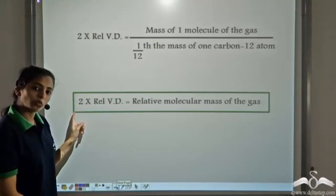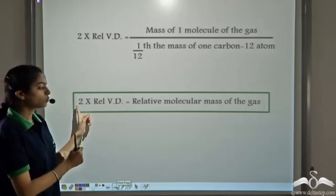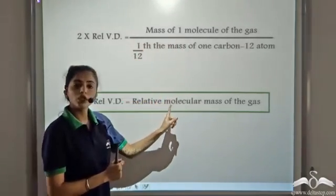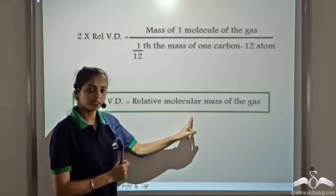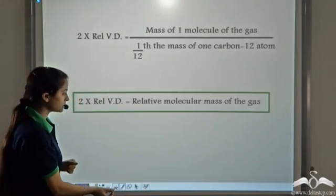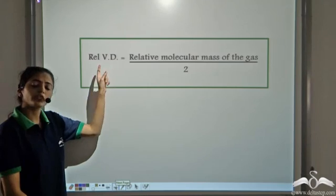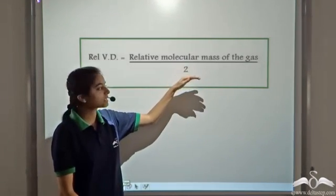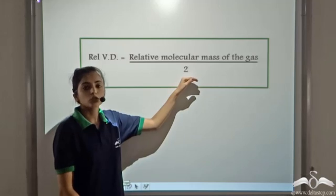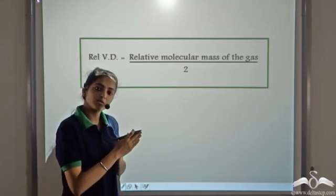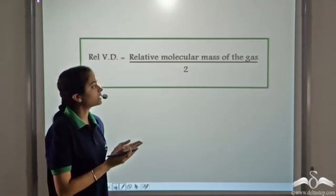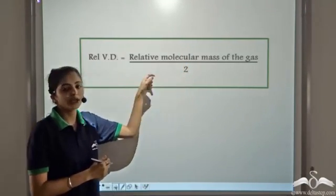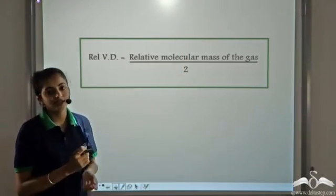So this is an important relation: two times the relative vapour density of any gas equals the relative molecular mass of the gas. From this, the relative vapour density of any gas equals the relative molecular mass divided by two. So to calculate the vapour density of a gas, we simply calculate its relative molecular mass and divide it by two.